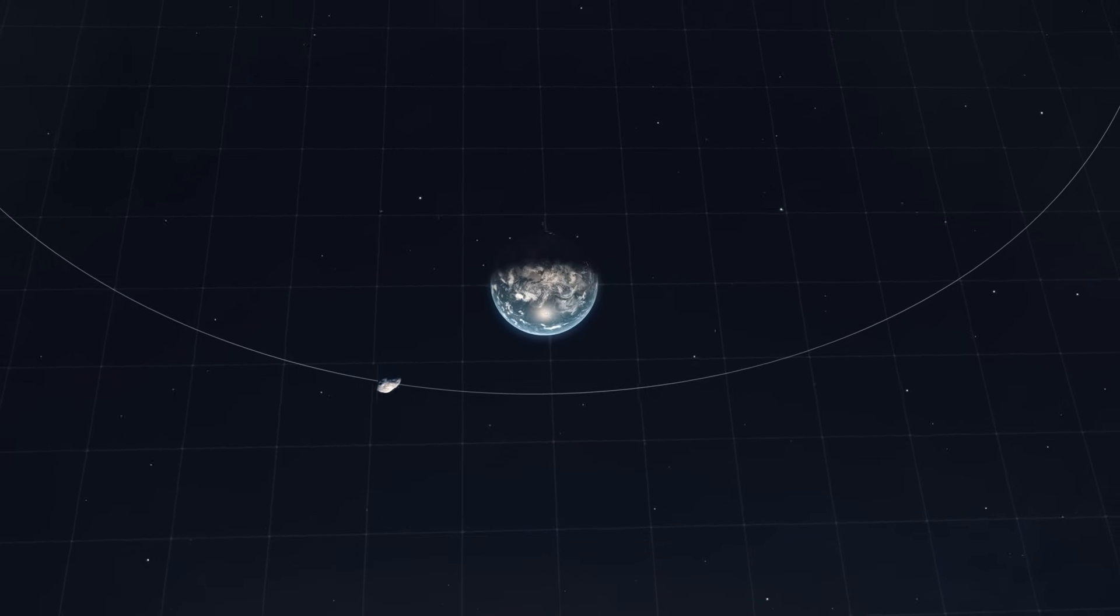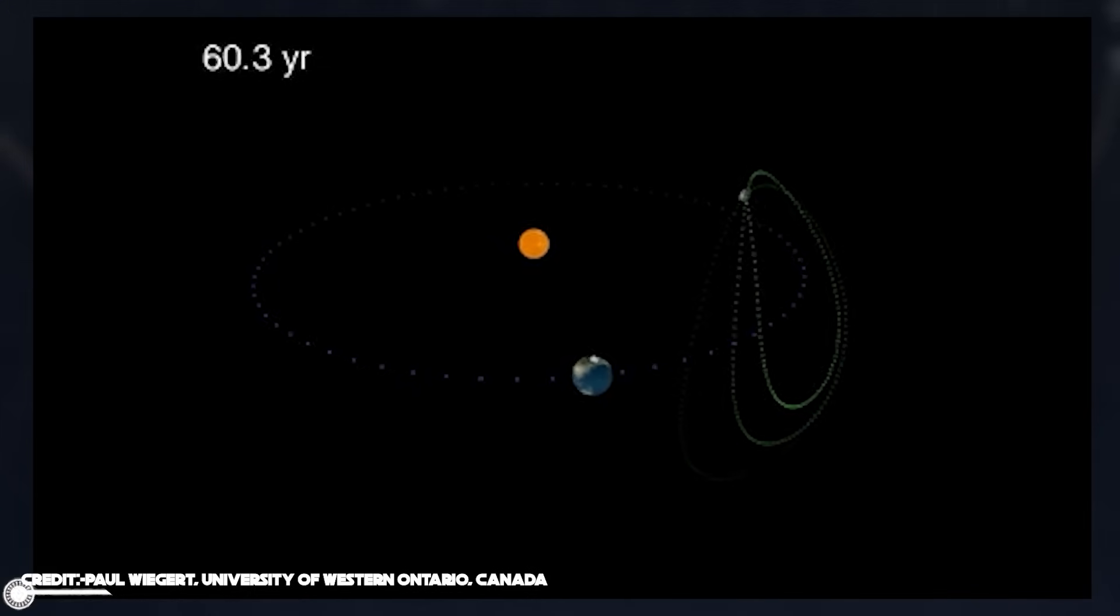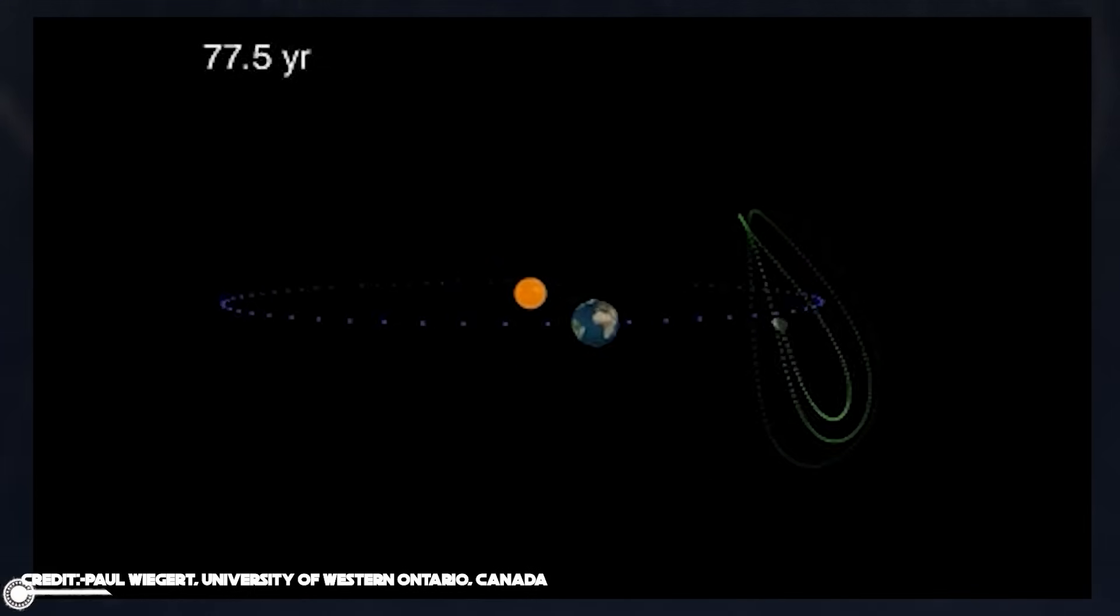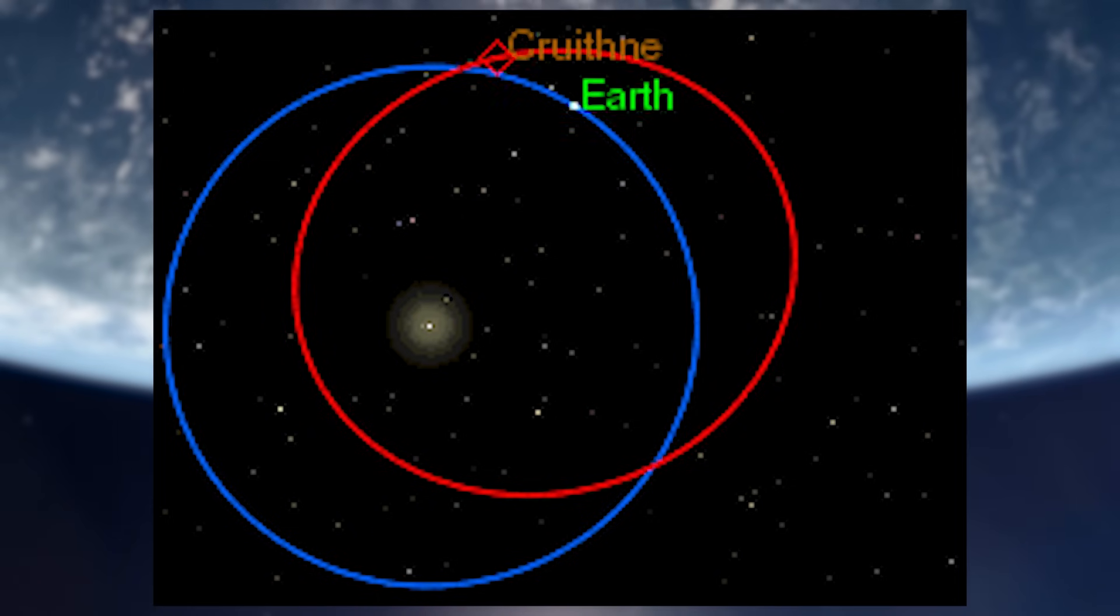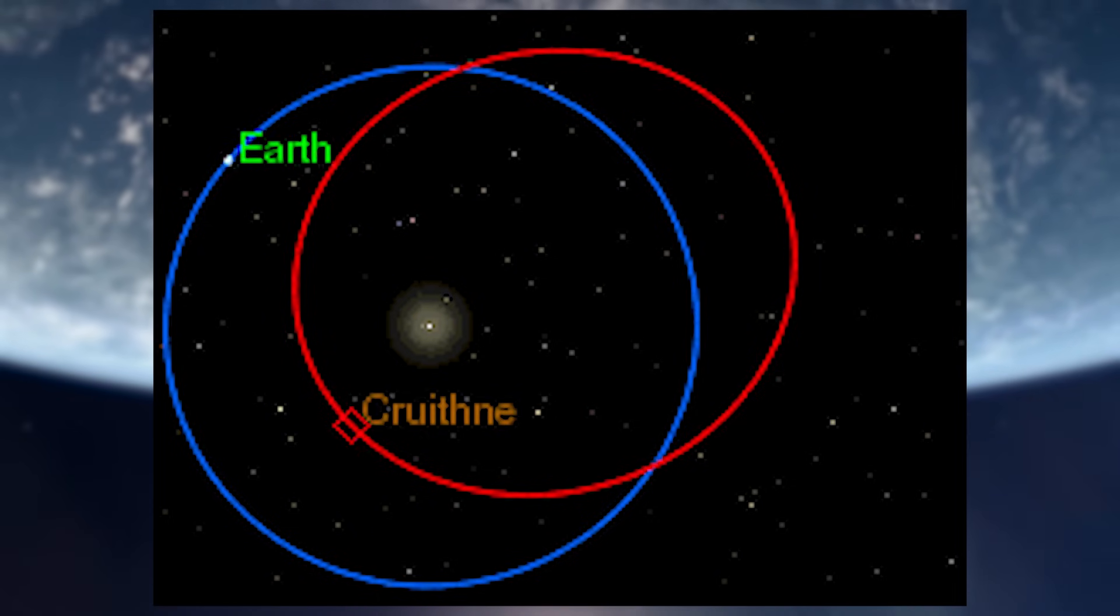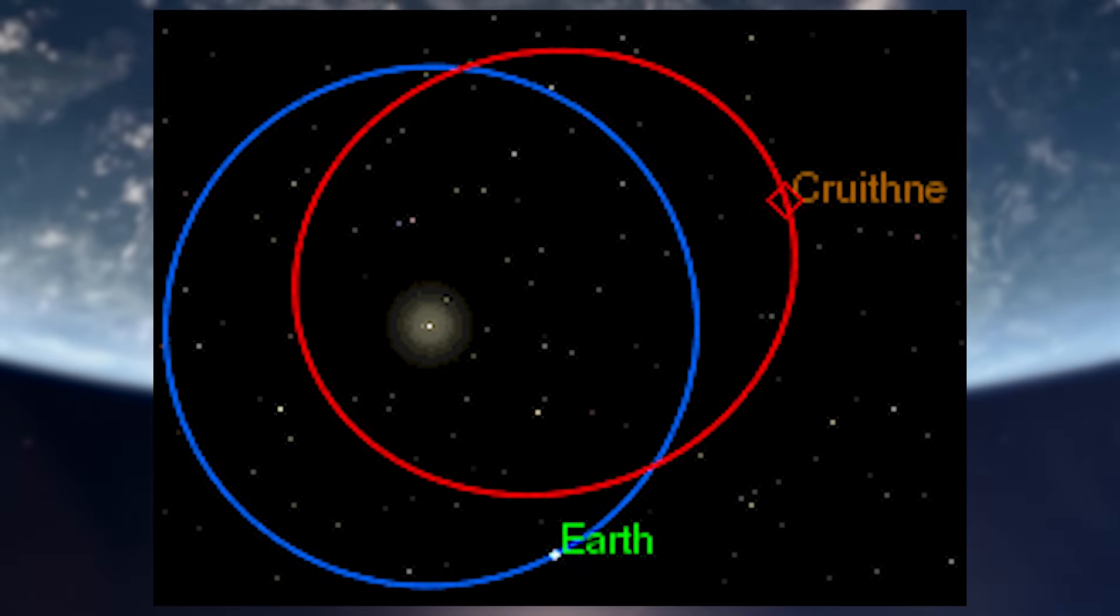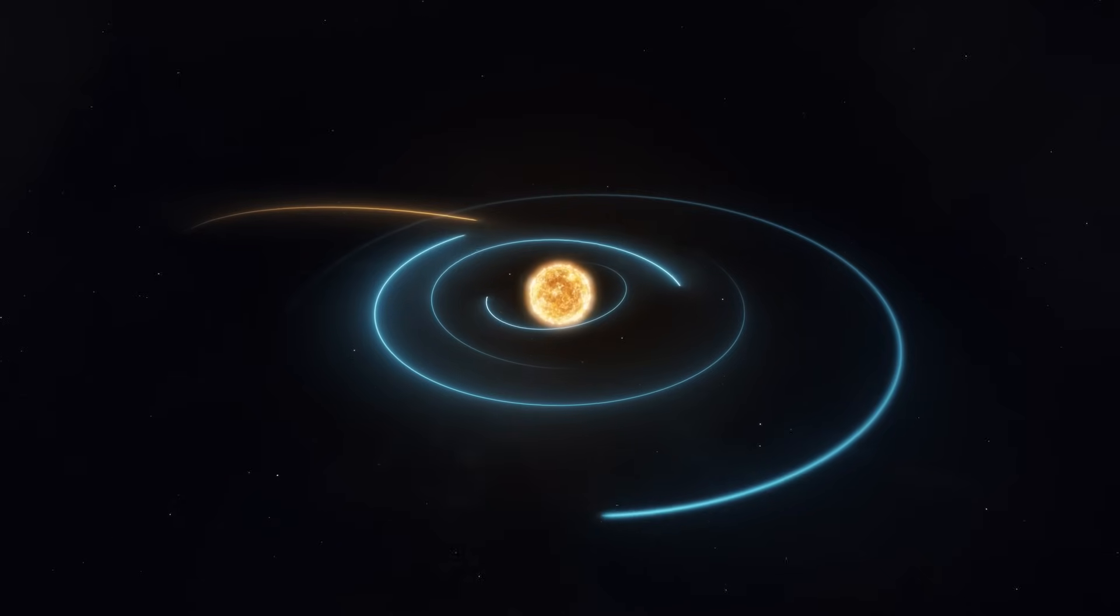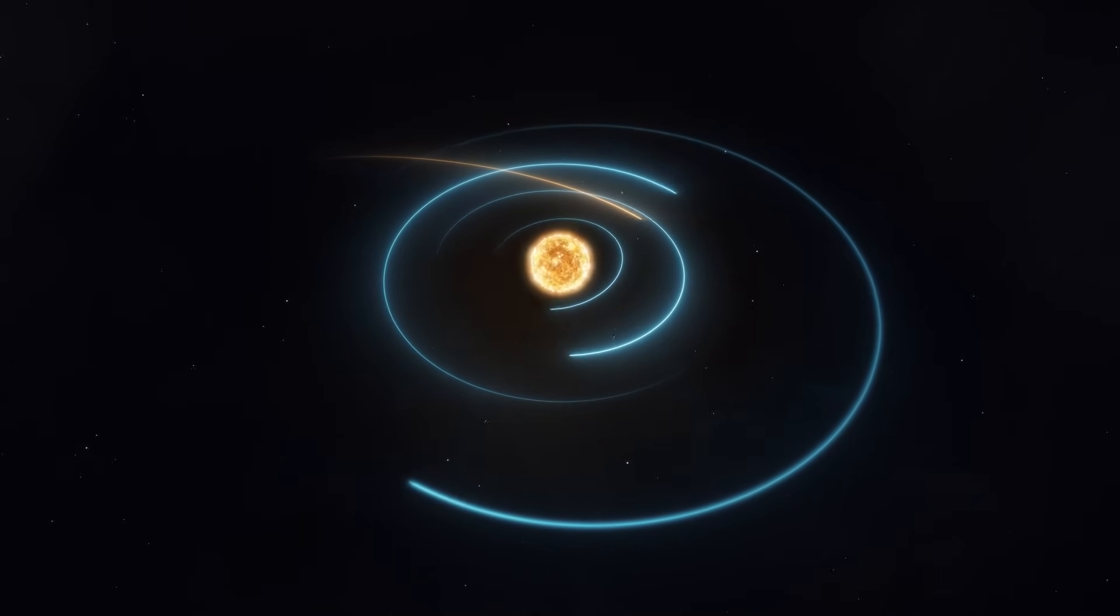Asteroids known as Earth Trojans, such as 2010 TK7, have orbits around the Sun which are similar to the orbit of Earth. These NEOs, near-Earth objects like 3753 Cruithne, appear to be orbiting a point rather than Earth. As these asteroids follow the same orbital path as Earth, they seem to be either leading or trailing it in its orbit. Who knew the answer to that?